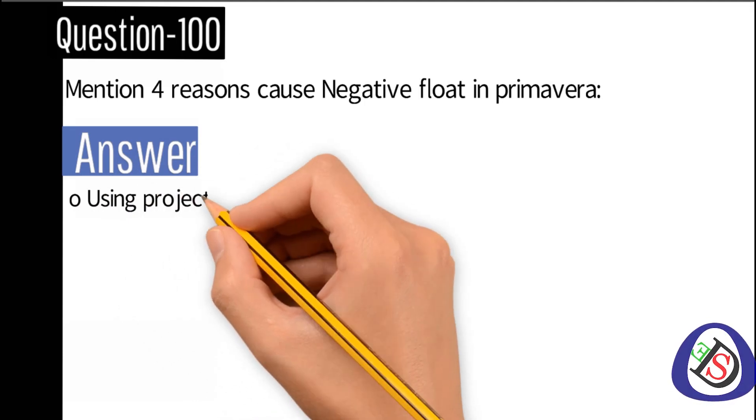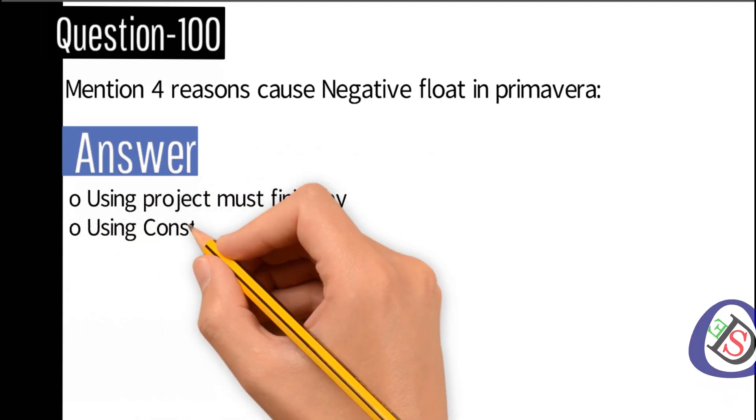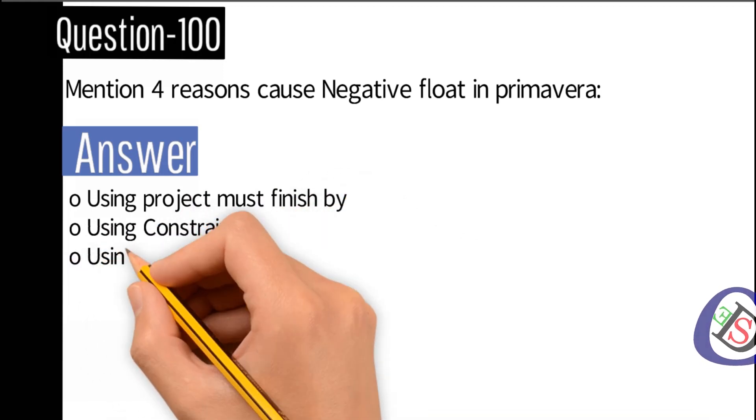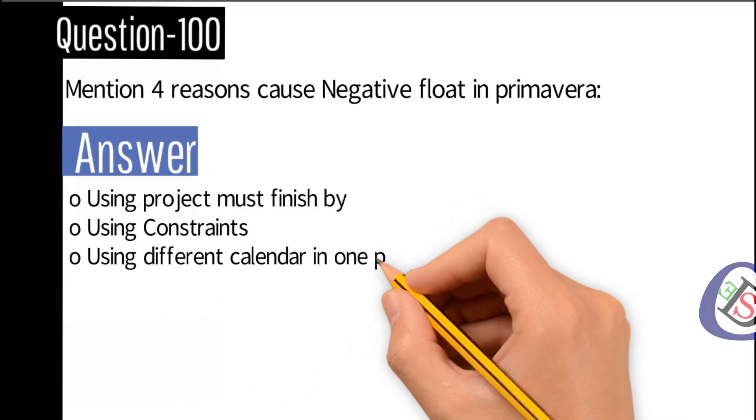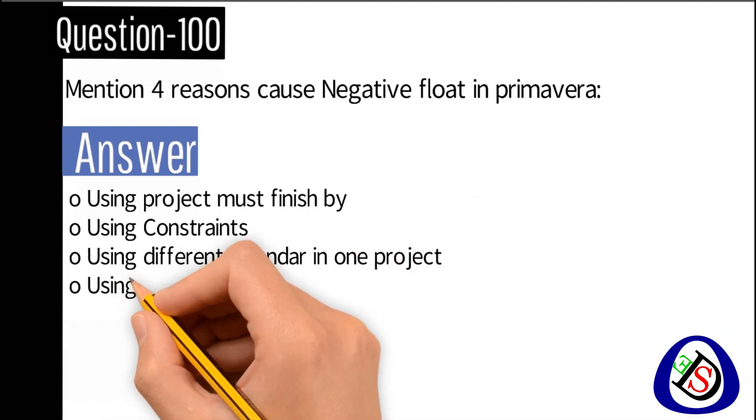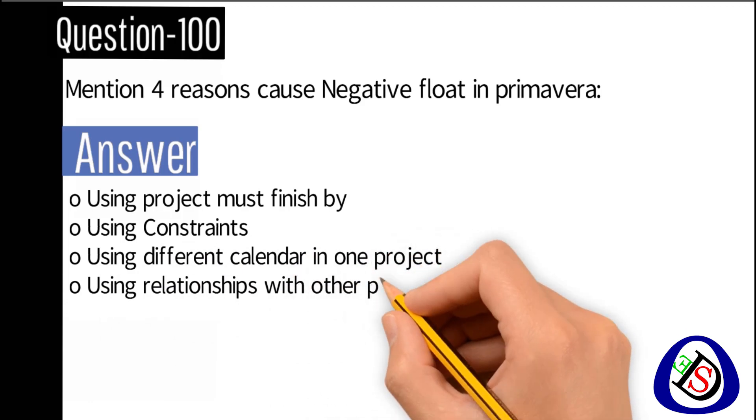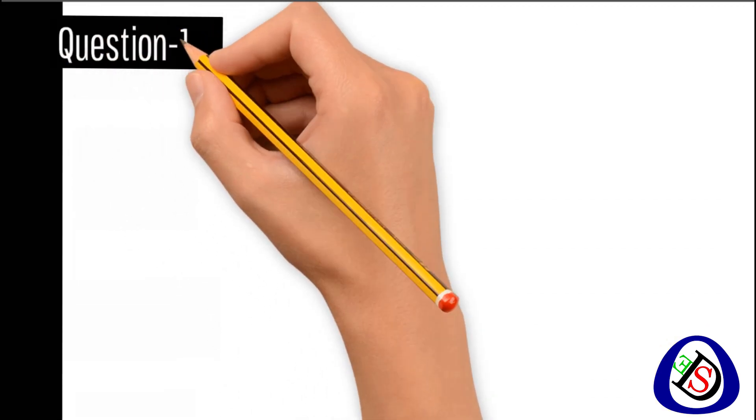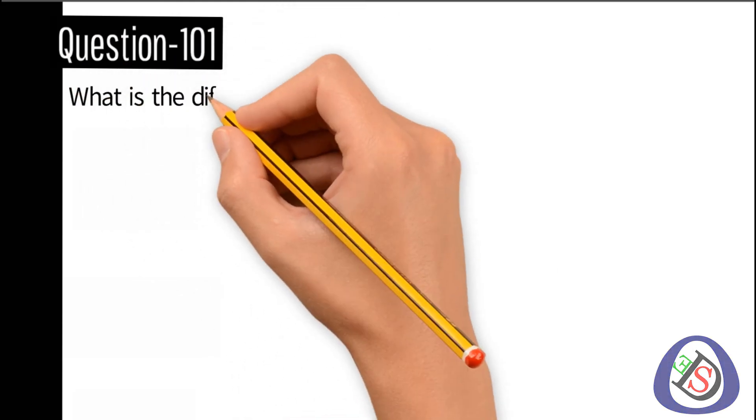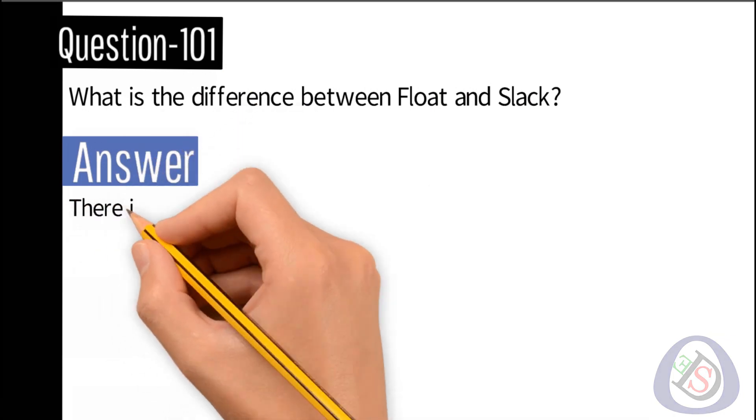Answer: Number one, using project must finish by constraint. Number two, using constraints. Number three, using different calendars in one project. Number four, using relationships with other projects.